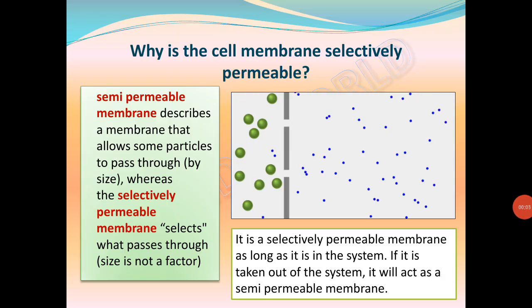What is the difference between a semi-permeable membrane and a selectively permeable membrane? A semi-permeable membrane allows particles to pass through based on size. A selectively permeable membrane selects or chooses what passes through — size is not the only factor. Even if a particle fits the pore size, it may not be allowed to pass. A membrane acts as a selectively permeable membrane as long as it is in a living system; taken out of the system, it acts as a semi-permeable membrane. The plasma membrane is therefore a selectively permeable membrane.